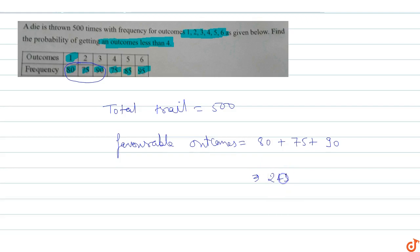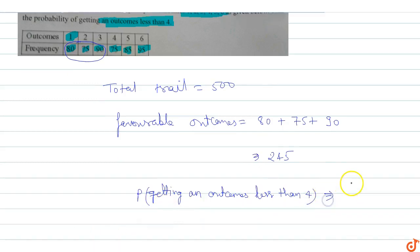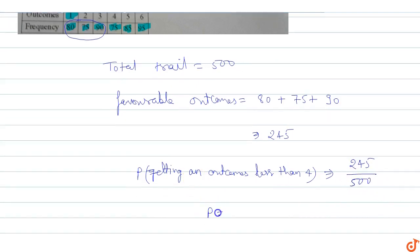So the probability P of getting an outcome less than 4 equals favorable outcomes over total trials. The probability P equals 245 upon 500.